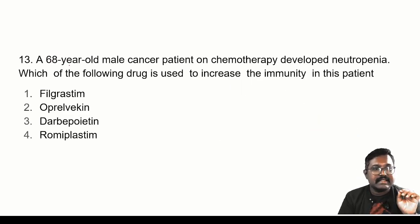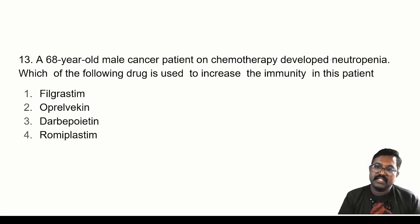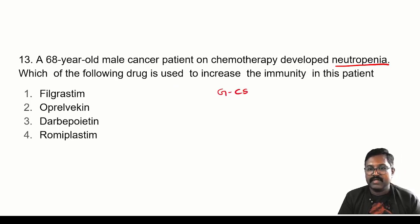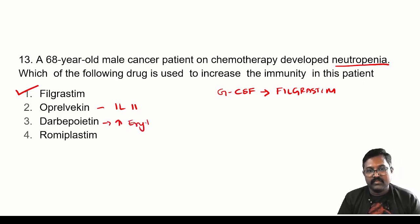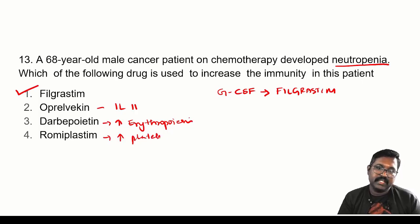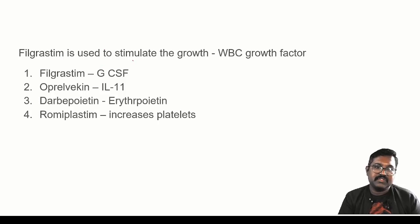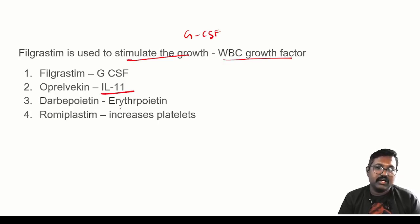Thirteenth question: a 68-year-old cancer patient on chemotherapy developed neutropenia — which drug increases immunity? The answer is a granulocyte colony stimulating factor: filgrastim. Oprelvekin is an interleukin-11 analog. Darbepoetin increases erythropoiesis. Romiplostim increases platelets in thrombocytopenia. Filgrastim is used to stimulate WBC growth as a granulocyte colony stimulating factor.